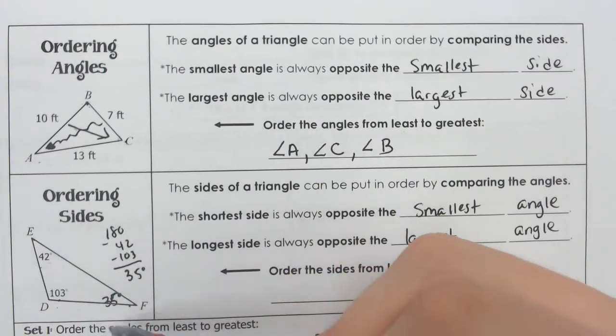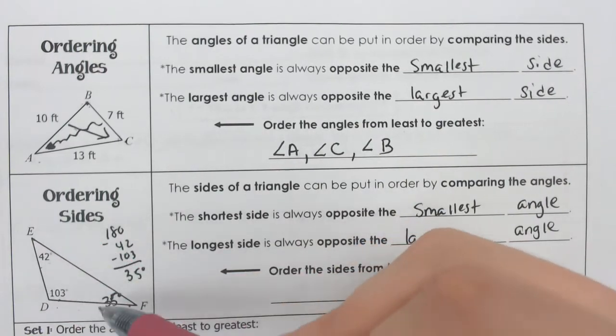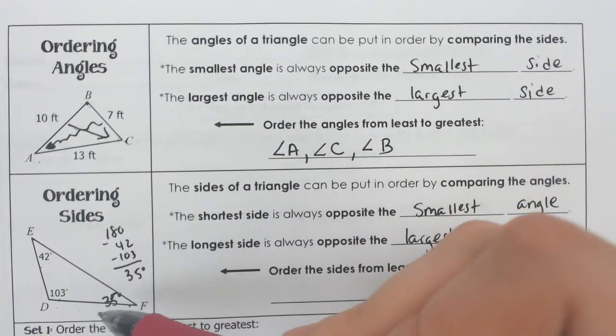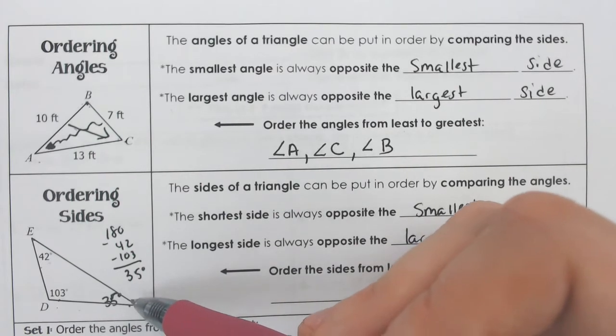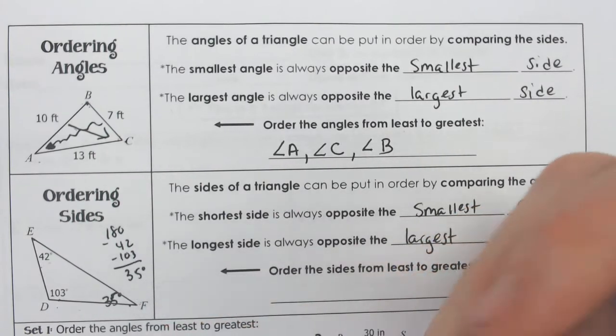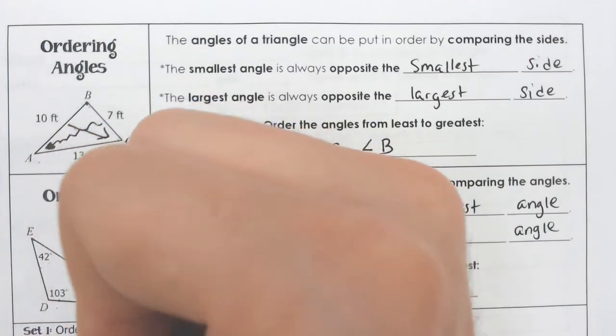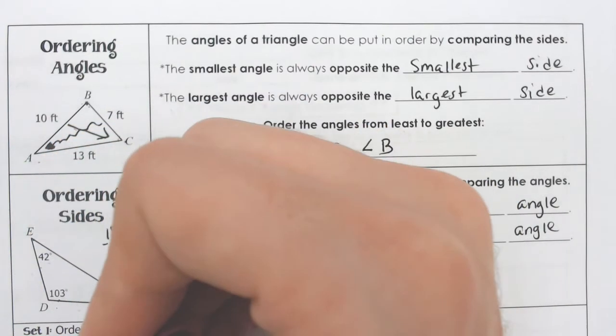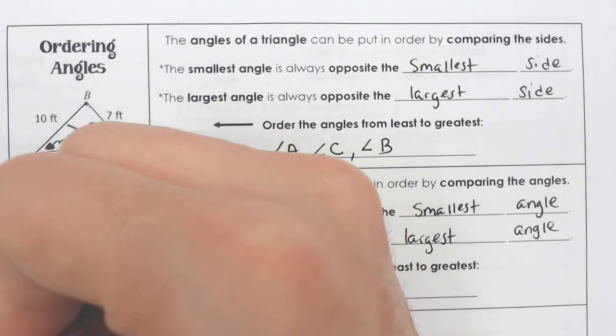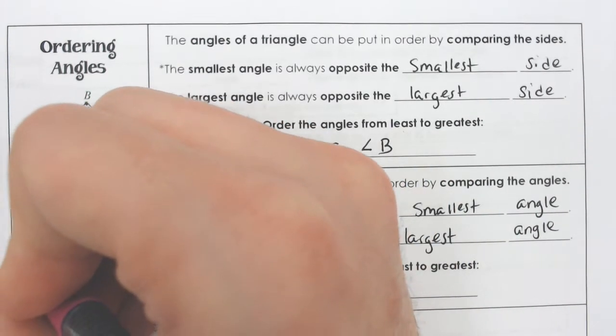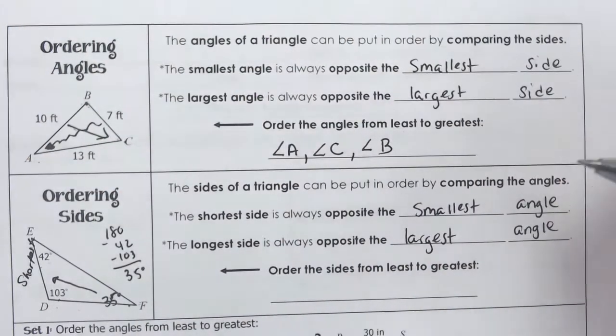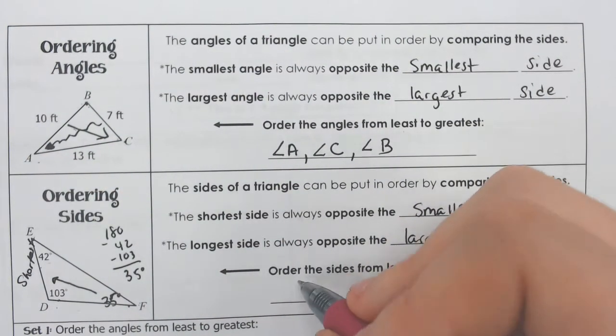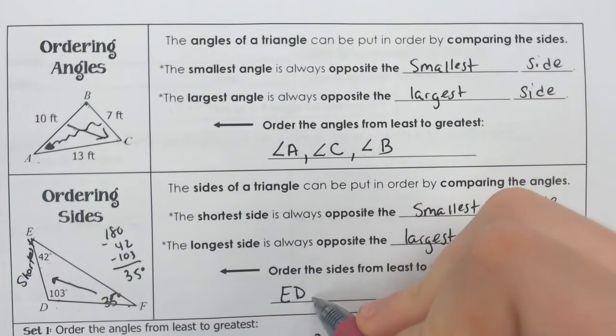Now we know which one's the smallest angle. 35 is by far the smallest angle. So angle F is the smallest angle, and F is opening up to side ED. If you go across from that 35, that would be the shortest side because it is across from that shortest angle. So that means that side ED is the shortest.